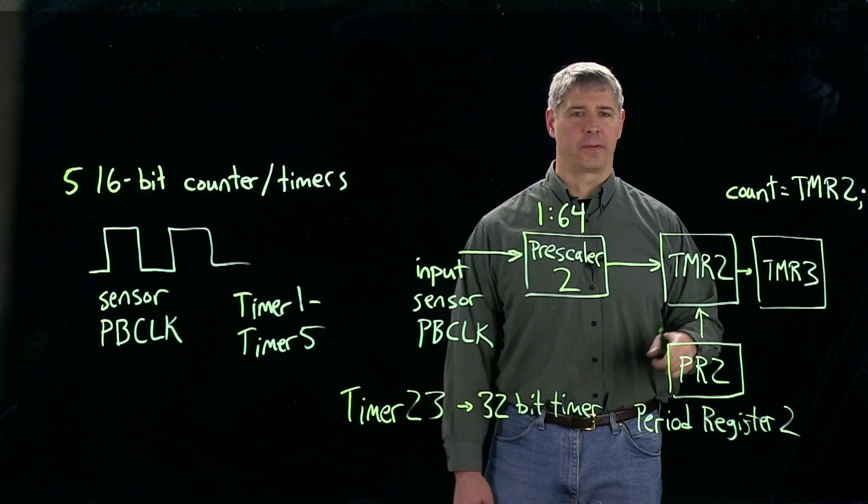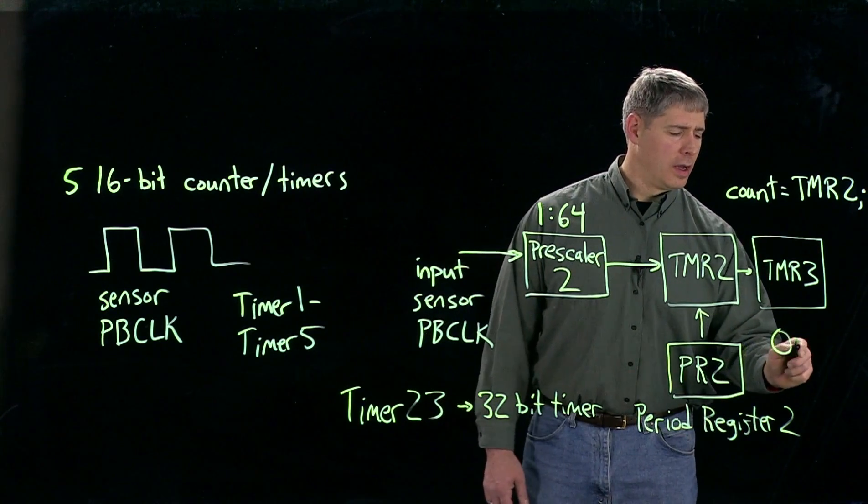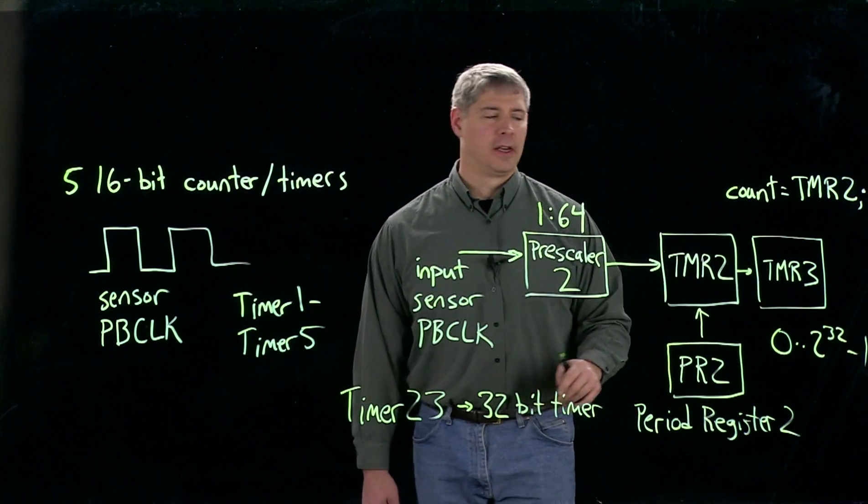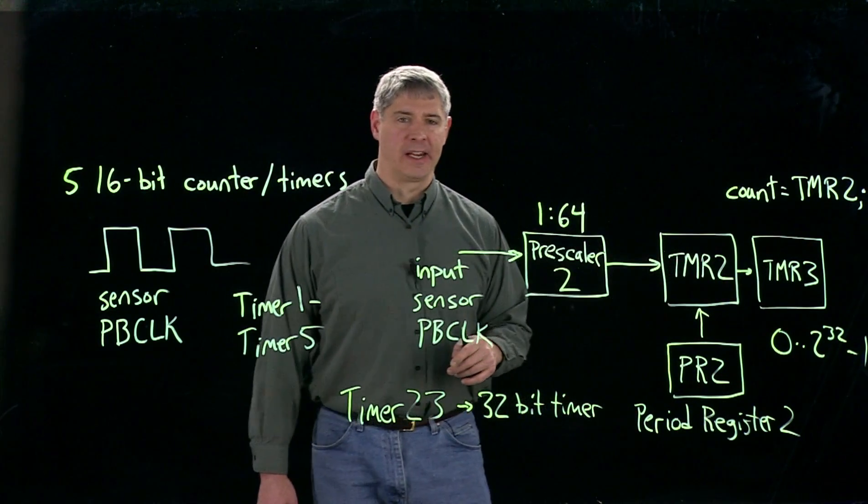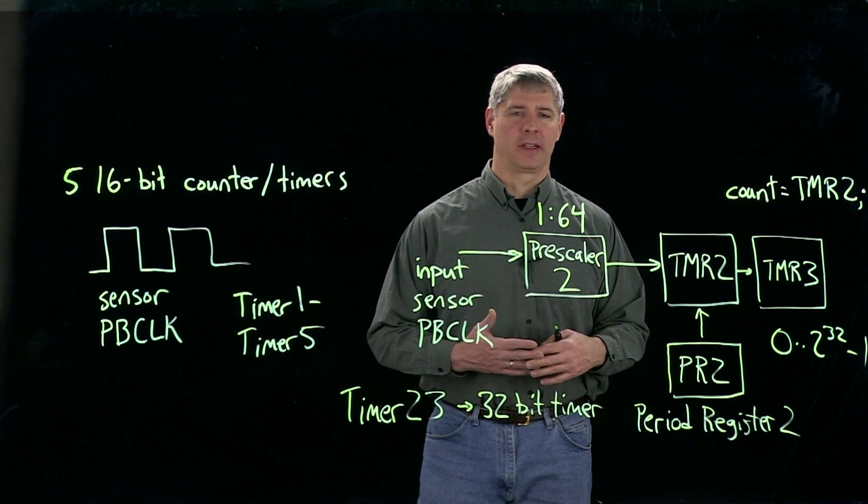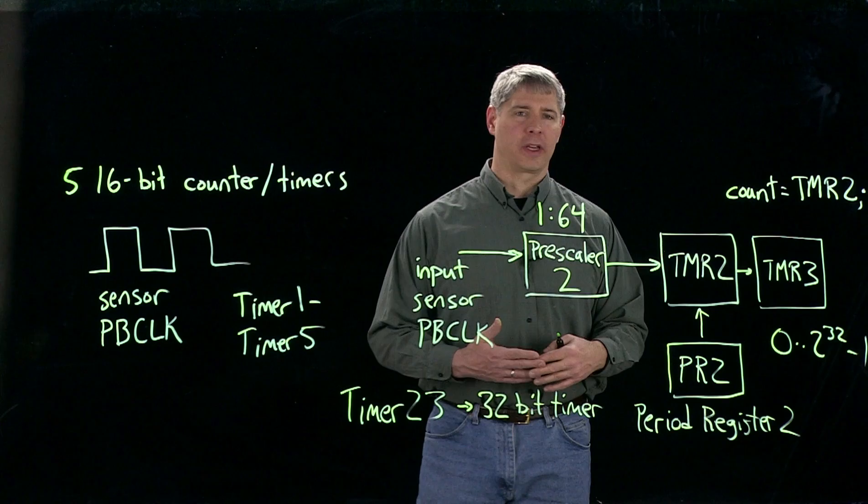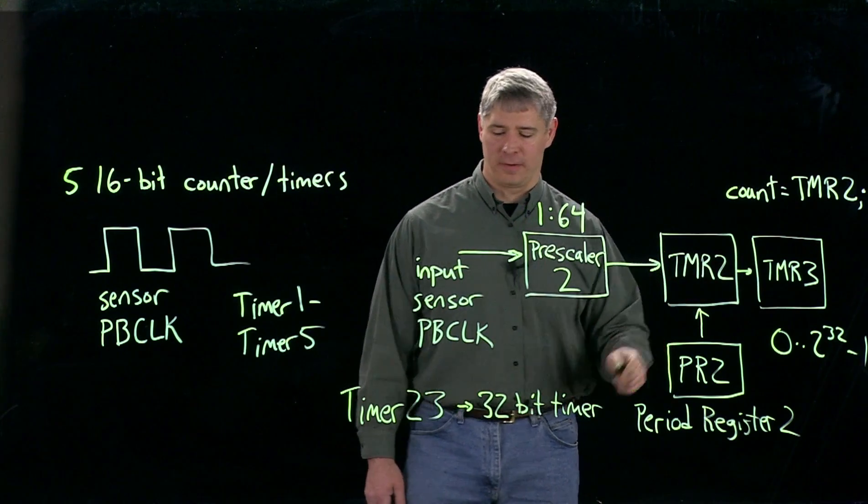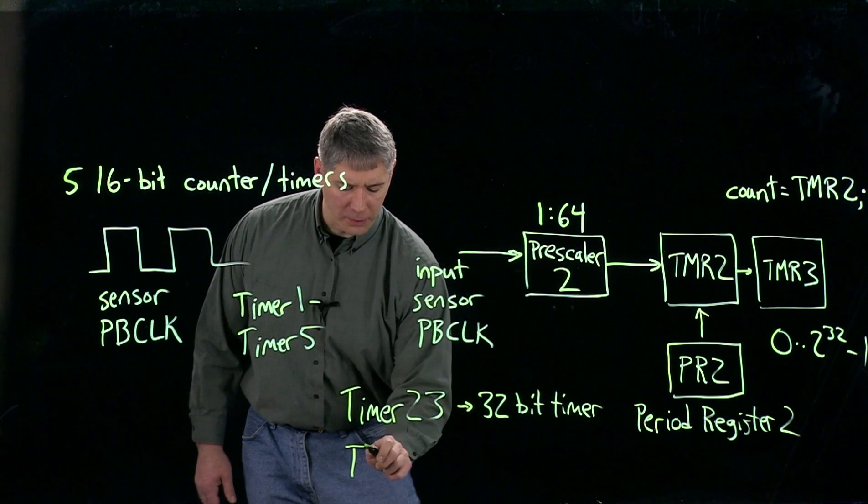So now we can count from 0 up to 2 to the 32 minus 1, or over 4 billion, using these two counters chained. So we have a choice. We can use five 16-bit timers, or we can take pairs 2 and 3 and make one 32-bit timer out of them. You can also do the same with 4 and 5.